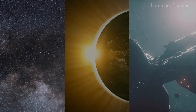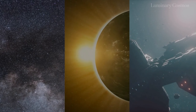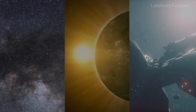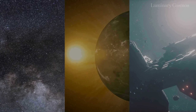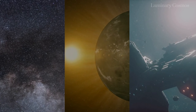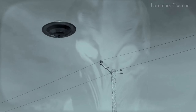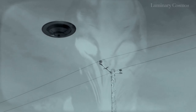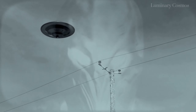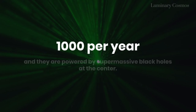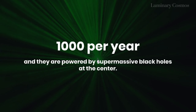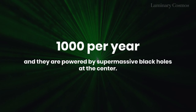These galaxies are more than 10 billion times more massive than the sun, and they formed when the universe was less than a billion years old. They are also very bright and active, producing new stars at a rate of thousands per year. These galaxies are called high-redshift quasars, and they are powered by supermassive black holes at their centers.